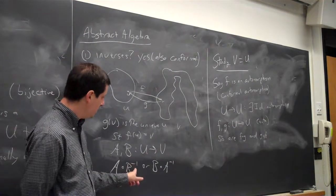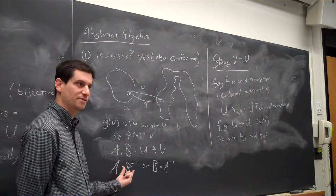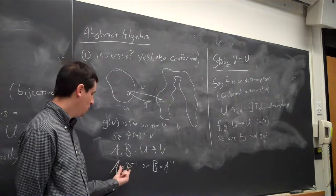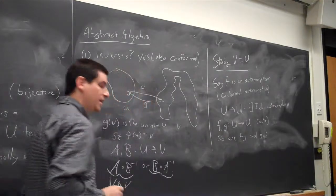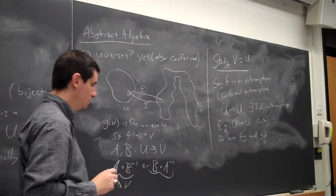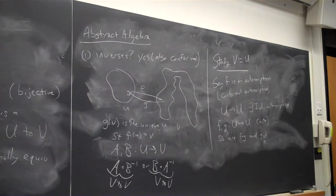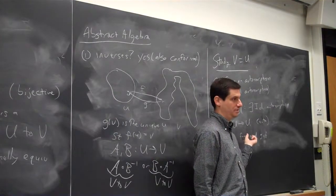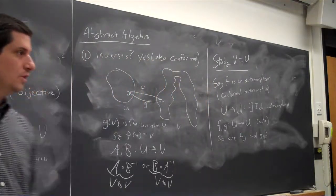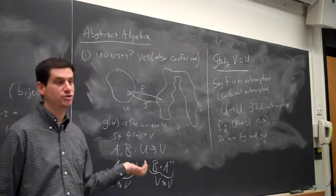B inverse maps from V to U, and then A takes us from U back to V. So A composed with B inverse is a map from V to V, and B composed with A inverse is also from V to V. This gives good ways to combine things. Now, the question is: do I want to compose functions by F composed with G, or F composed with G inverse? Maybe that's the more natural thing to do. It's still the right definition to use F composed with G, but this example illuminates that F composed with G inverse could have been the more natural way to combine two functions.